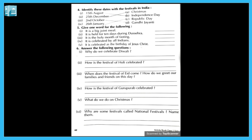And last one: why are some festivals called national festivals? Name them. Answer: because national festivals are connected to India's freedom from British rule — jo British rule tha, un se India ko freedom mili thi, isliye hum unko national festival kehte hain aur celebrate karte hain. They are Gandhi Jayanti, Republic Day, and Independence Day. More national festivals also exist.